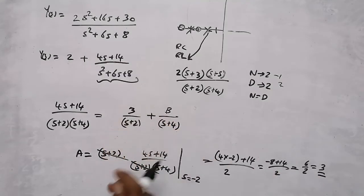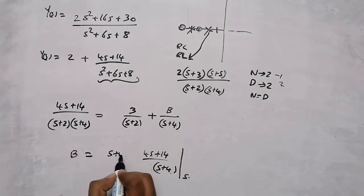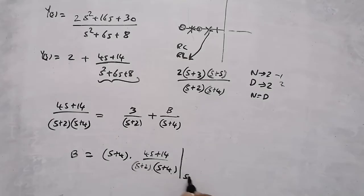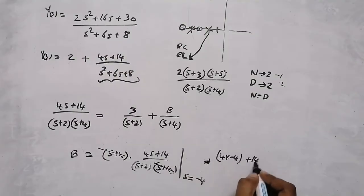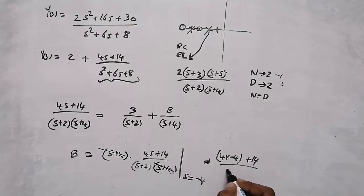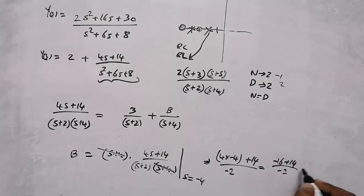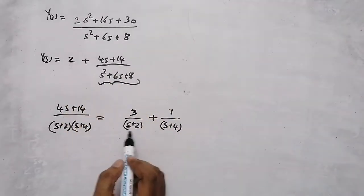To find B, multiply the function by (s + 4) and put s = −4. This gives: 4(−4) + 14 / (−4 + 2) = (−16 + 14) / (−2) = (−2) / (−2) = 1. So B = 1. Therefore Y(s) = 2 + 3/(s + 2) + 1/(s + 4).